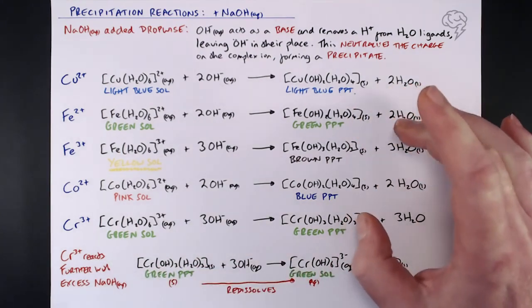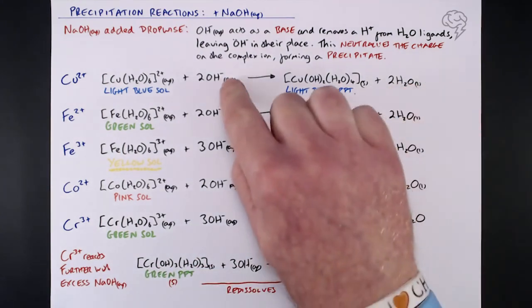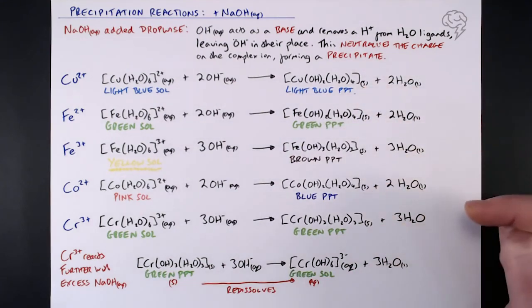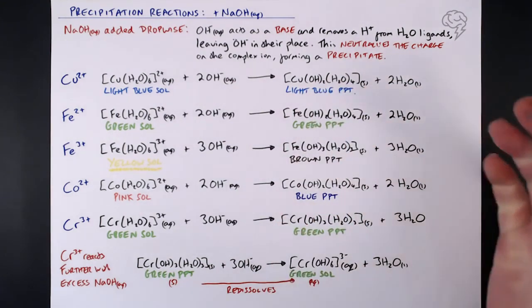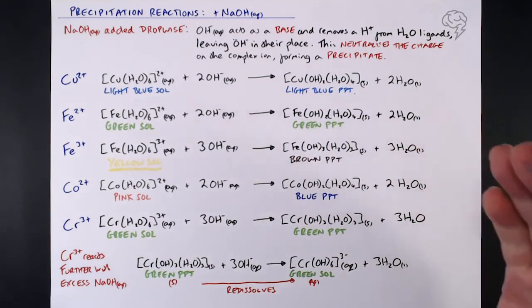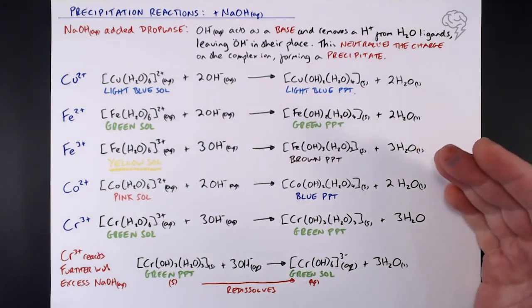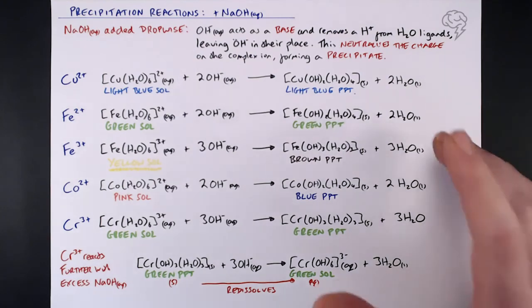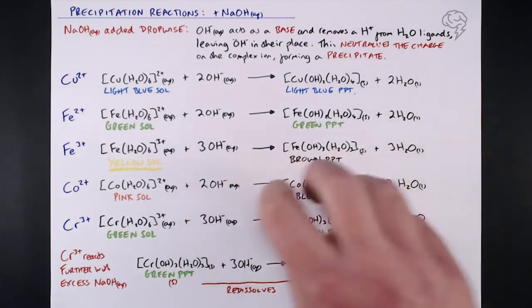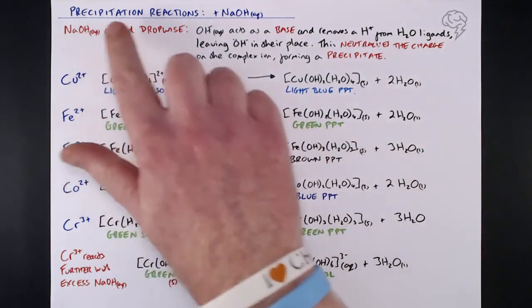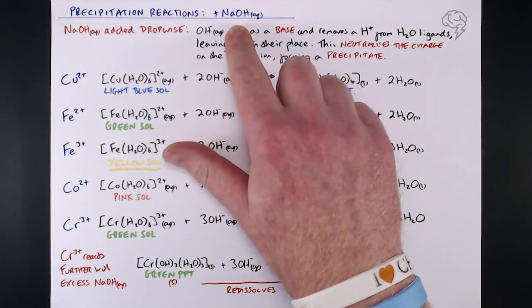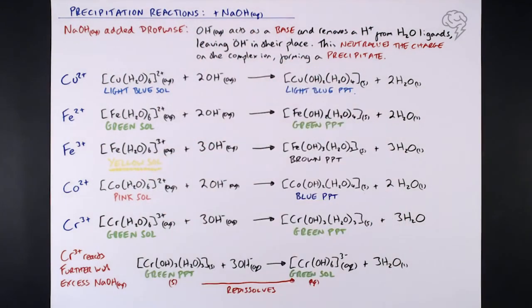So make sure you know these equations. Make sure you use your state symbols to show that you're getting solids and precipitates. There's no two ways about it — you just need to get some flashcards together and remember these color changes. These are really important because I'm going to be linking them to the other precipitation reactions we need to know with ammonia, NH₃, in the next tutorial.